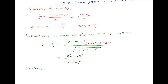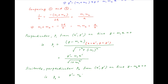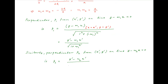Similarly, the perpendicular distance p2 from the point x dash y dash onto the line y minus m2x is equal to 0 can be written as y dash minus m2 times x dash divided by the square root of 1 plus m2 squared.